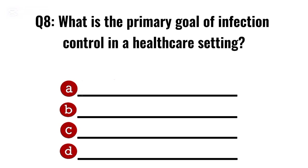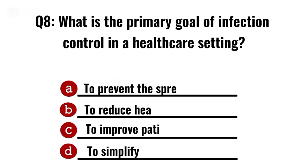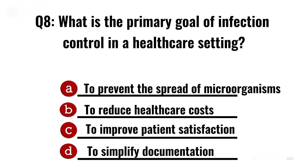Question 8. What is the primary goal of infection control in a healthcare setting? Correct option A: To prevent the spread of microorganisms.